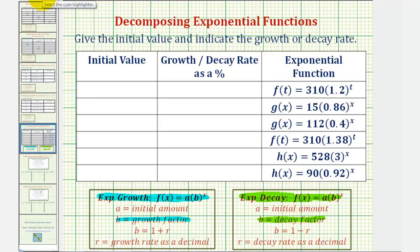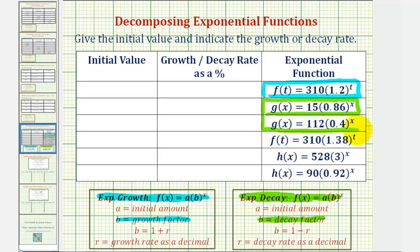Looking at our six functions: the first has a base of 1.2, which is greater than one — exponential growth. The next has a base of 0.86, which is less than one — exponential decay. Next, a base of 0.4 — also exponential decay. Then a base of 1.38, greater than one — exponential growth. Next, a base of three, greater than one — exponential growth. Finally, a base of 0.92 — exponential decay.